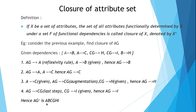So the closure of ag is the set of all attributes functionally dependent on ag: a, b, c, h, g, and i. Here g is included because ag to g exists by reflexivity, just as ag to a does. This is the concept of closure of an attribute set.